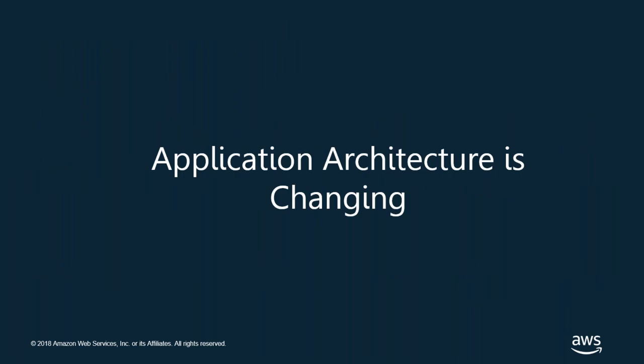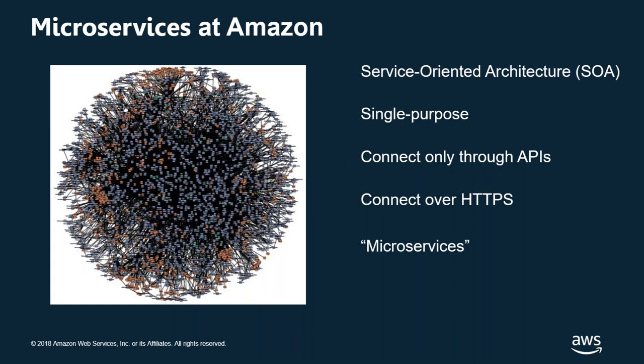Now let's talk about how application architecture is changing. This slide represents microservices at Amazon — how the Amazon.com website interacts — and you can see a bunch of tiny dots, some blue and some red, corresponding to customer-facing services and internal services. All of these come together to enable you to shop on Amazon.com. These are all microservices: based on the service-oriented architecture concept, each individual microservice is single-purpose, connected only through APIs over HTTPS.